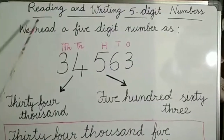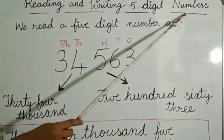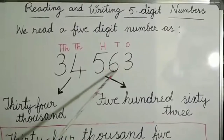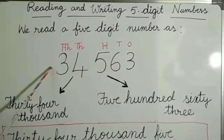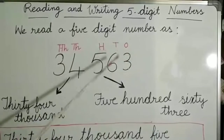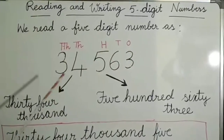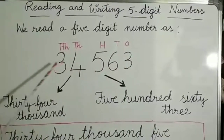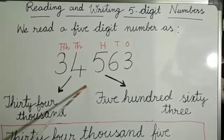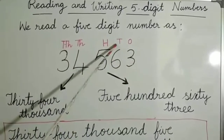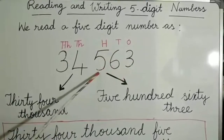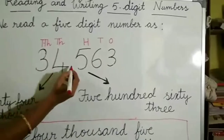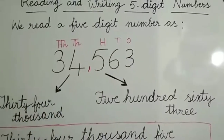Let us learn about reading and writing five-digit numbers. Take the number — one, two, three, four, five — this is a five-digit number. 3 at ones, 6 at tens, 5 at hundreds. Whenever we read a five-digit number, we divide it into two periods: ones, tens, and hundreds in the ones period. That is why we write one comma before the ones period.